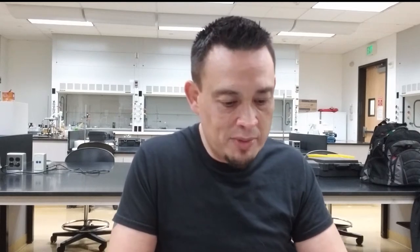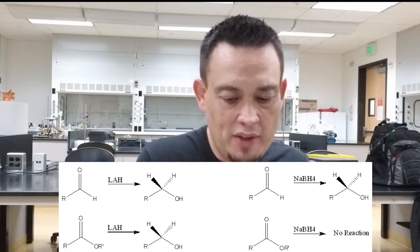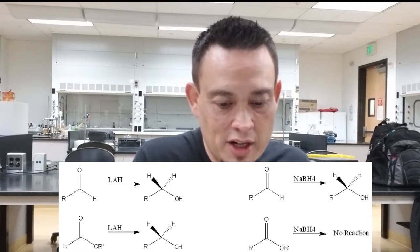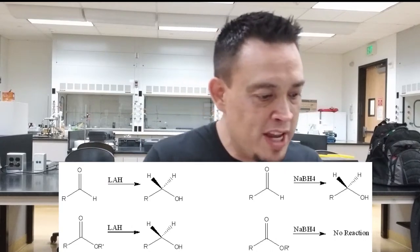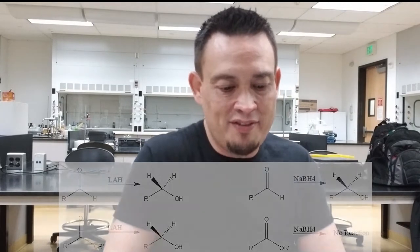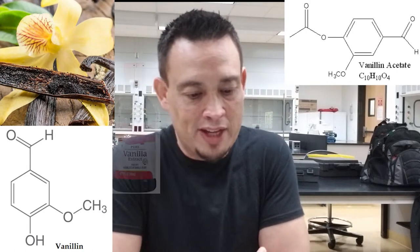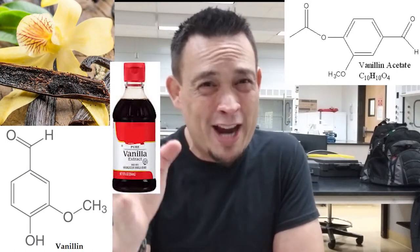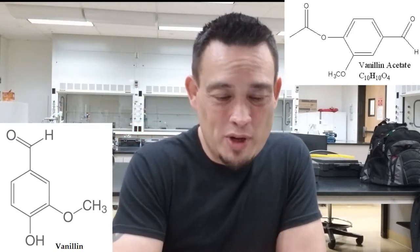Here you can see an overview of when you need to use LAH versus NaBH4. This is more applicable to stuff in lecture, but I wanted to point it out because the compound we're reacting with is vanillin acetate. Vanillin is the main constituent extracted from vanilla bean responsible for vanilla flavoring — though actual vanilla flavoring is more than just vanillin, and vanillin acetate is actually one of the components as well.